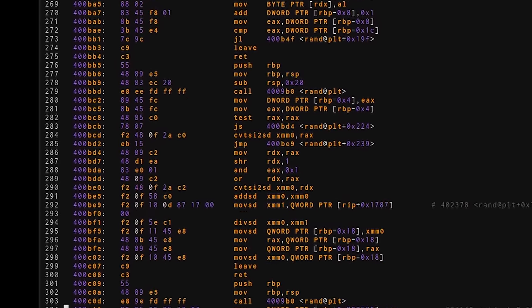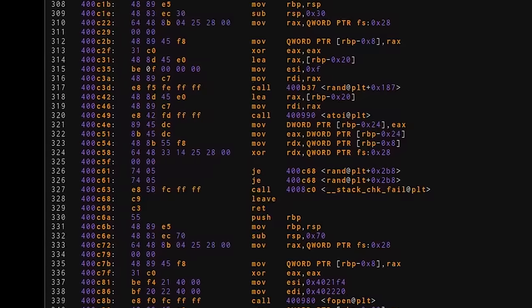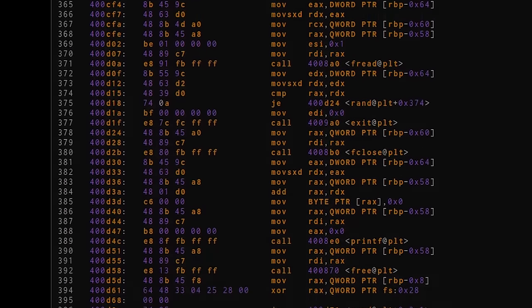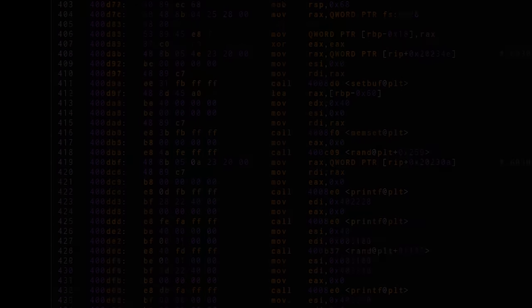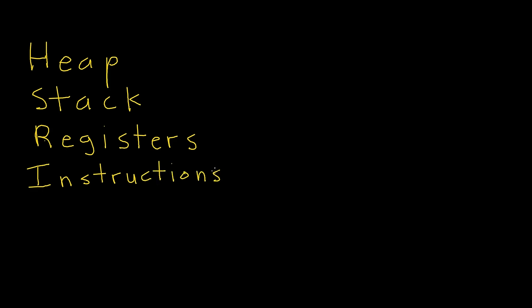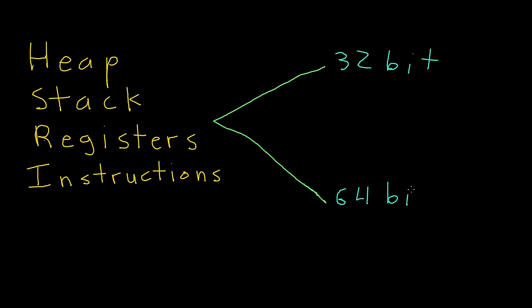Before we can fully begin to understand assembly, we must first understand the basic elements of an executable. Every C program has four main components: the heap, the stack, registers, and instructions. At this time, there are two main architectures that dictate how a program is compiled and executed — 32-bit and 64-bit. We will be going over the 32-bit architecture and 32-bit assembly.